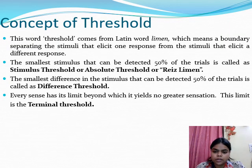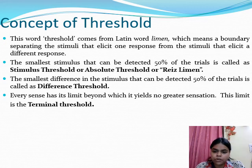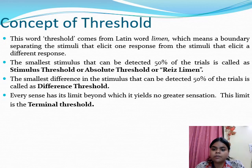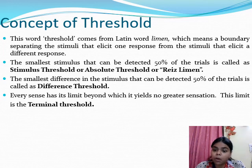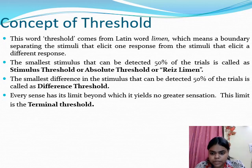The concept of threshold is the key concept in psychophysics. The word threshold comes from the Latin word 'limen,' which means boundary — that is, the minimum stimulus, the least amount of stimulus that can be detected 50% of the time. There are three types of thresholds. First is the stimulus threshold, also known as the absolute threshold or reiz limen — this is the minimum amount of stimulus that the subject can detect 50% of the time.